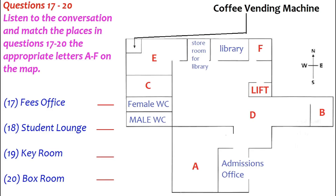Okay. After you've been to the fees office, come back past admissions. You'll see a very large room at the northwestern corner of the building — you can't miss it. That's the student lounge, and if you go in there you can meet some of the other students and see who'll have a room near you. That's good. Can I get a cup of coffee there? Yes, there's a vending machine in the corner. Then go to the key room, which is opposite the lift and next to the library. Show them your receipt and you can pick up your key there.